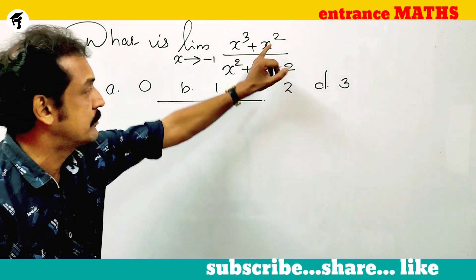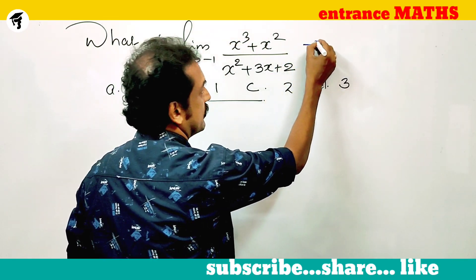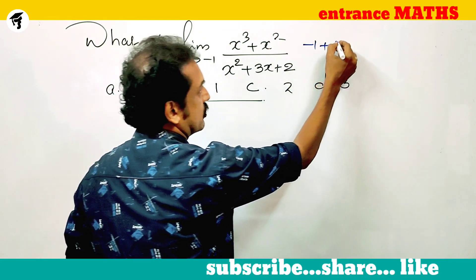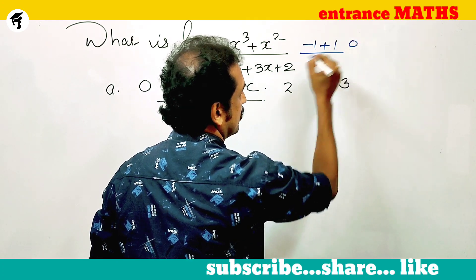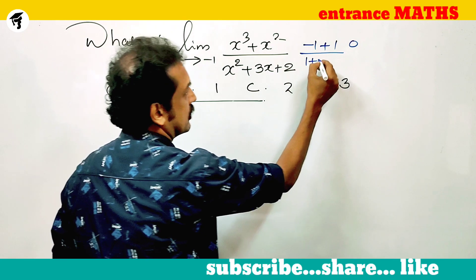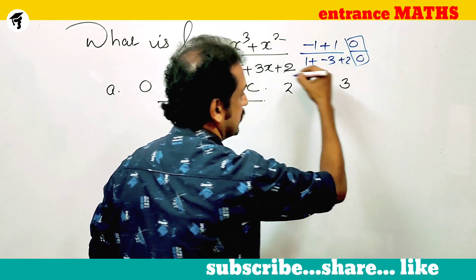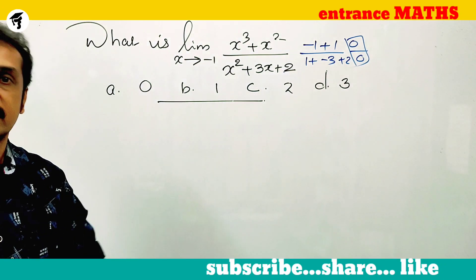Minus 1 the whole cube is minus 1. Minus 1 the whole square is plus 1. Now the numerator is 0. Minus 1 the whole square is plus 1, 3 into minus 1 minus 3 plus 2. That means 0 by 0. We will have to do 0 by 0 form.